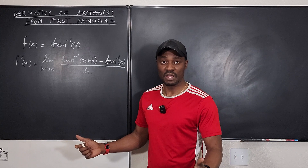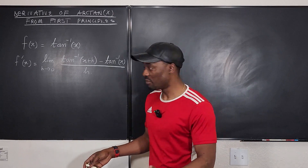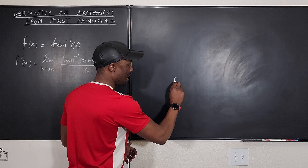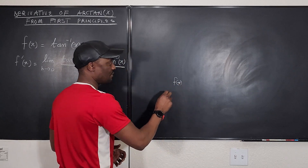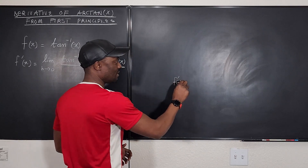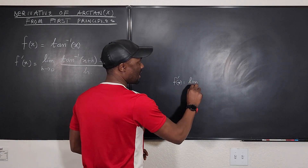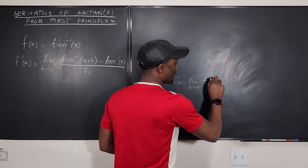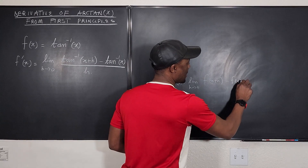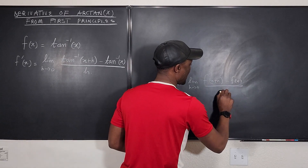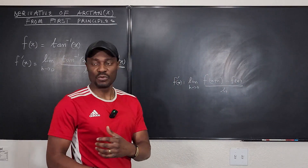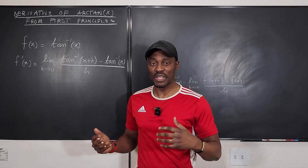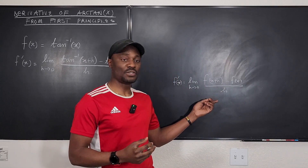I've already written this in the form of the definition. Remember that generally if we have f of x and you want to find the derivative, it will always be the limit as h goes to 0 of f of x plus h minus f of x divided by h. So all we have to do is manipulations — try and find something nice so that we can make use of this function.